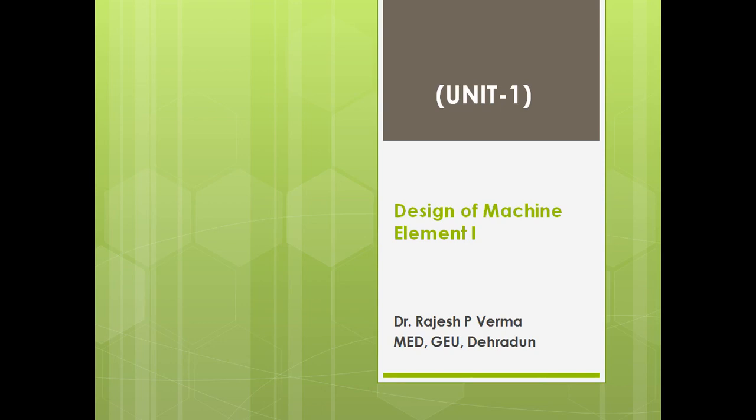In the previous lecture, we studied what is machine design, what is standardization, and what is the preferred number used in design. Now in this lecture, we will study the important engineering materials like steel and cast iron and their designations.